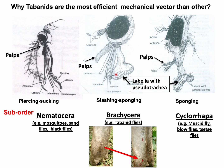Because the mouth parts of Tabanid flies have both lacerating and sponging features, they can first acquire the infectious agent and then pass it to a new host. This makes them more efficient mechanical vectors in comparison to the members of Nematocera and Cyclorrhapha.